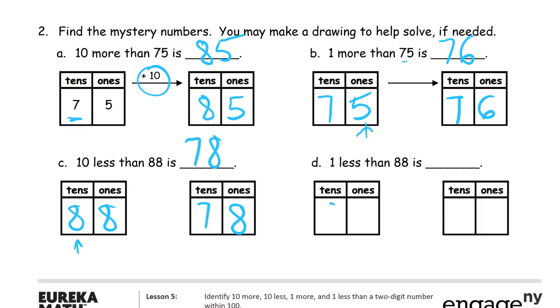And one less than 88. Well, again, we're going to start with 88. That's eight tens and eight ones. And if we're going to have one less, then that means we're looking at our ones, and that's going to be one less. So instead of, what's one less than eight? That's seven. We're still going to have the eight tens, 87.